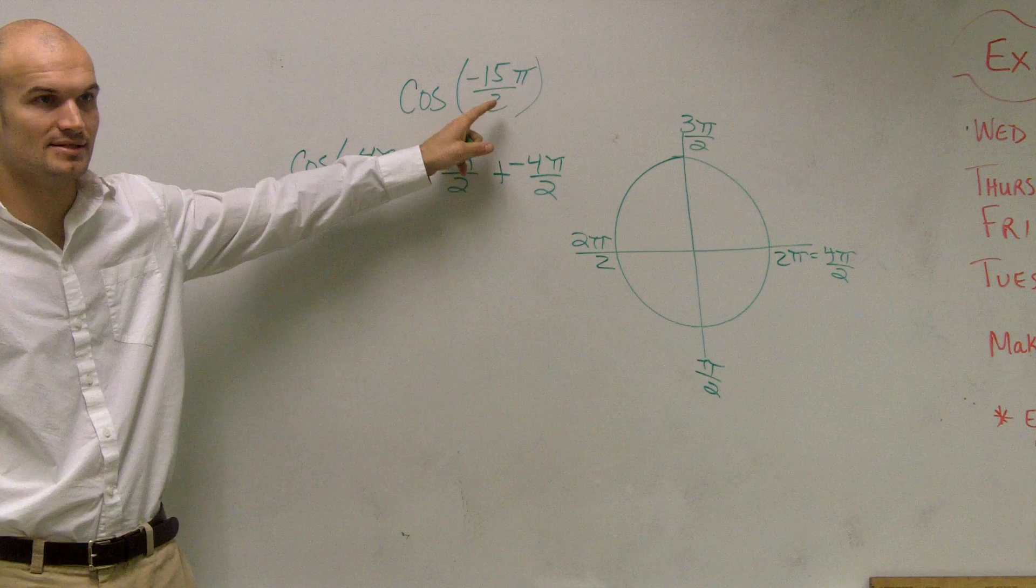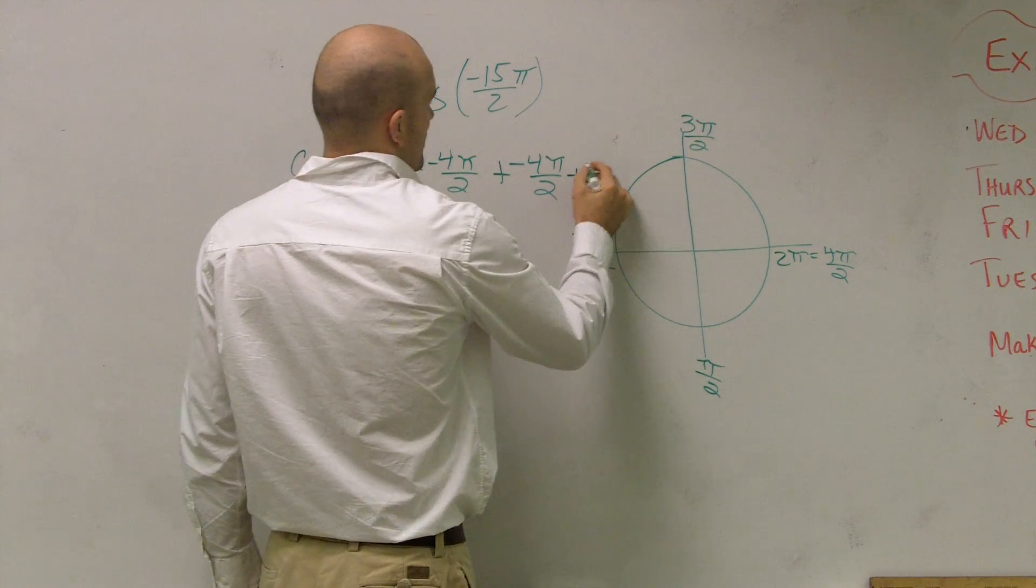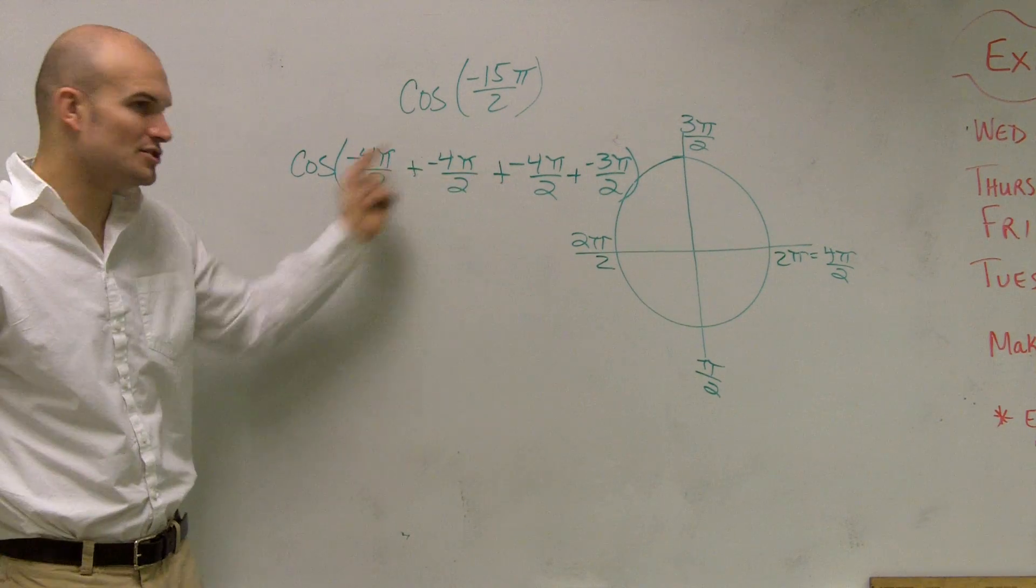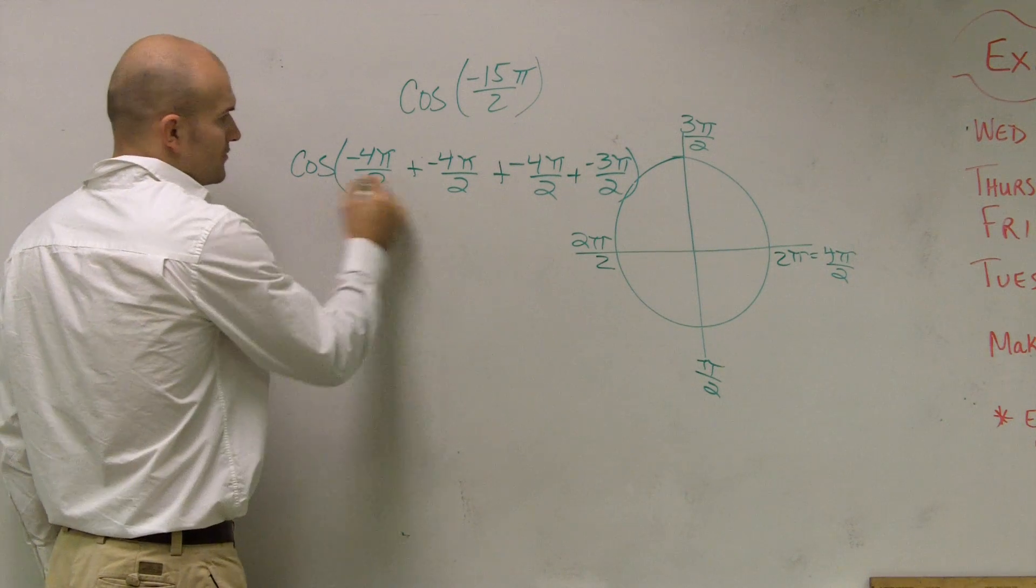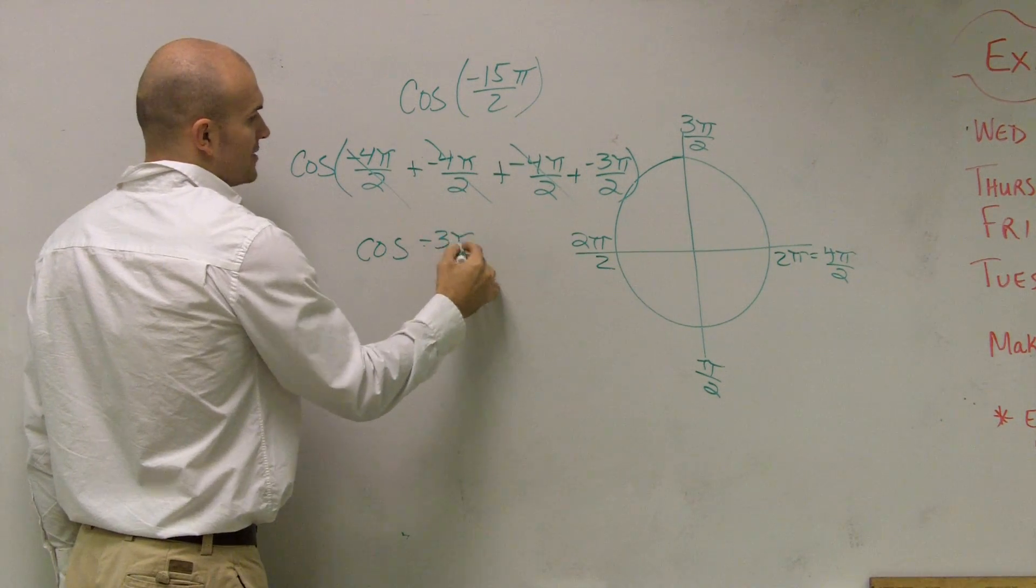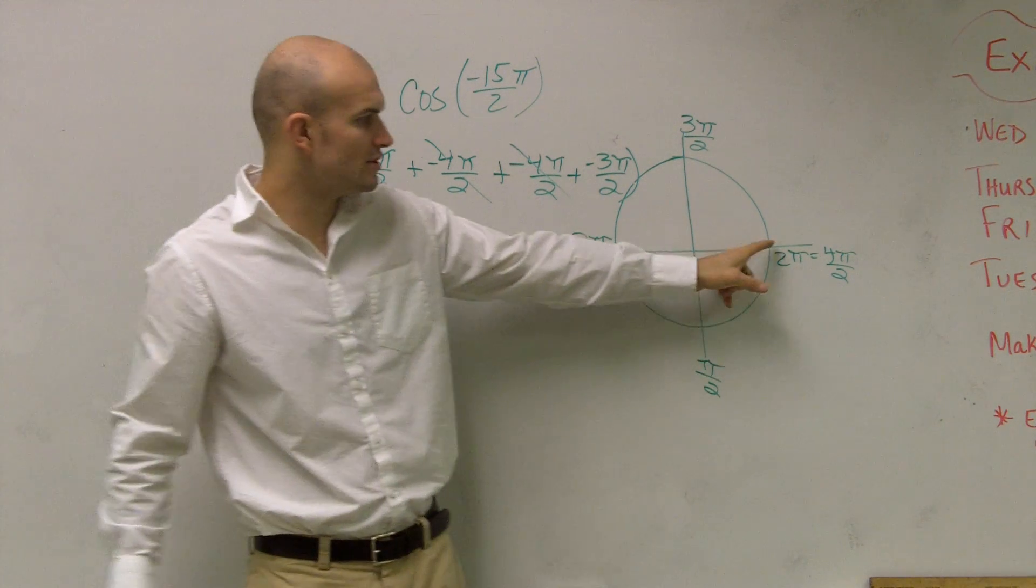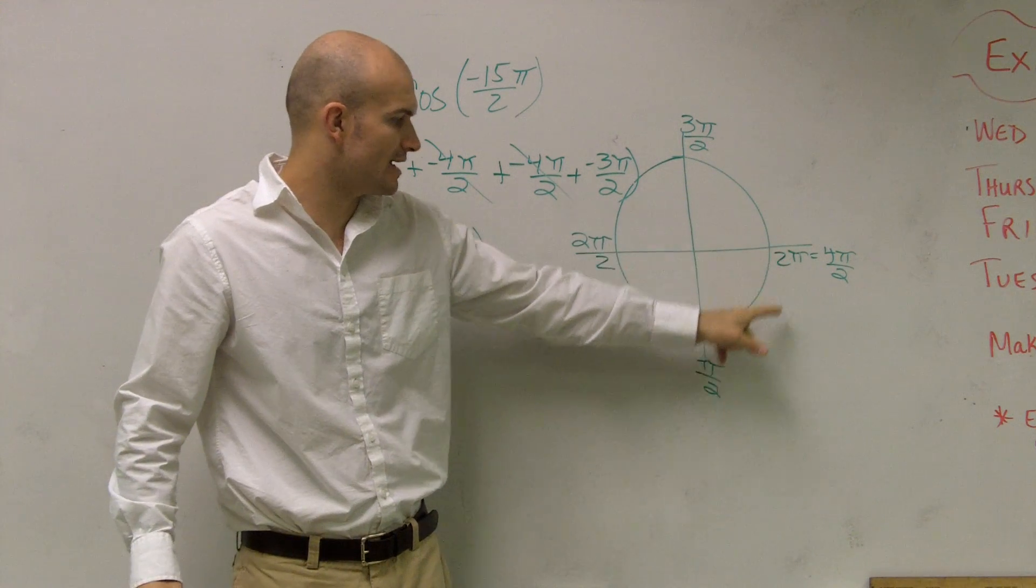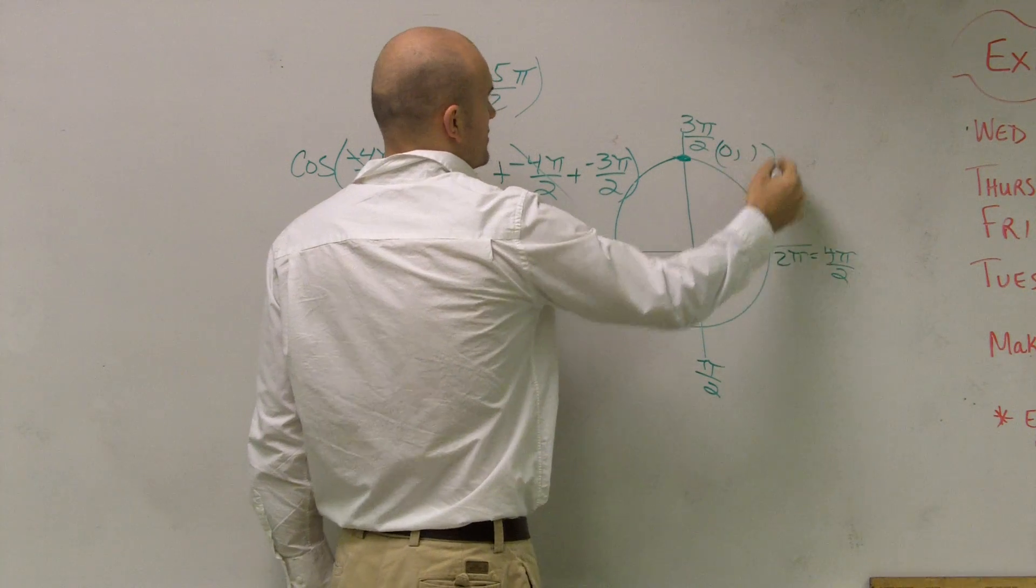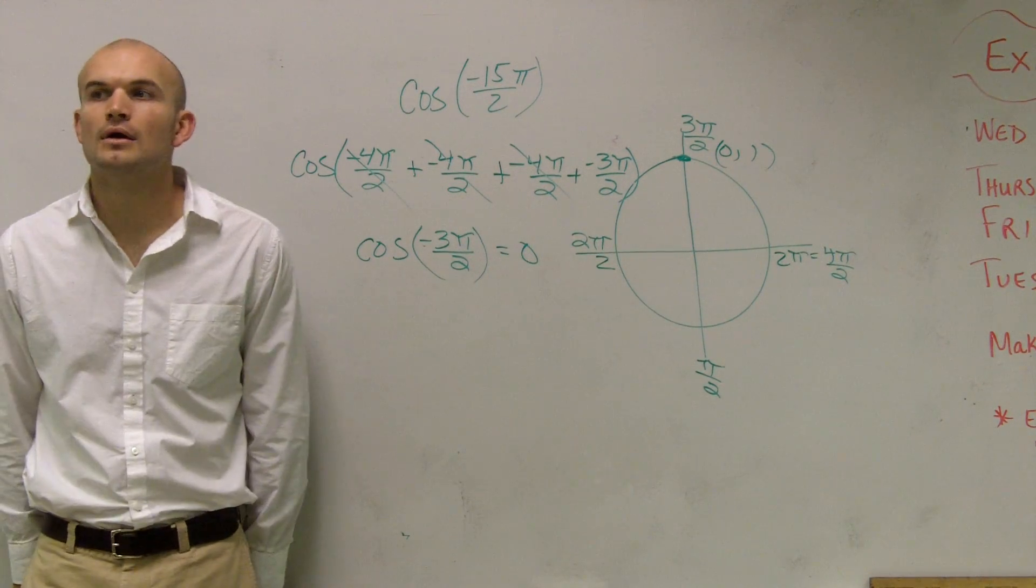Have I still got to where 15 is? No. But what's going to be my remainder? 3. Negative 3π over 2. Now, since all of these are just going around the circle, we just need to evaluate. We don't really care about these. We just really care about cosine of negative 3π over 2. So what's the cosine of negative 3π over 2? Well, here's 3π over 2 in the negative direction. So remember this point is (0, 1). The cosine is going to be 0.